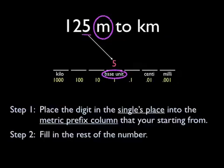Step 2 is to fill in the rest of the number. In this case, it's 125. Notice that we have to keep the placeholders as they are in the original number. So now we've placed the number 125 appropriately into the box and columns.